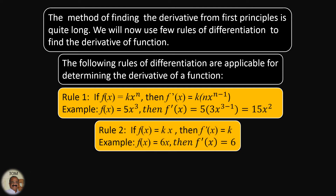Rule number 2: If f(x) = kx — just a coefficient k and x — then f'(x) is equal to k. That is the answer for the derivative. For example, if f(x) = 6x, then f'(x) = 6.